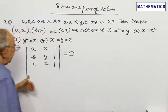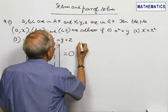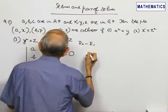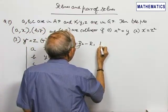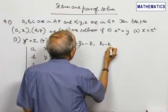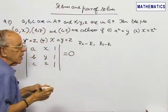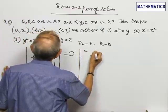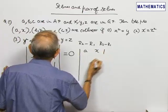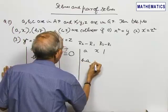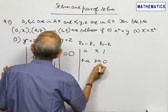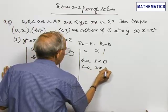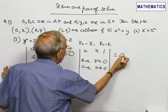Let us simplify the determinant. The operation I am going to perform is subtract the first row from the second row, subtract the first row from the third row. R2 minus R1, R3 minus R1. So this reduces to A, X, 1; B minus A, Y minus X, 0; C minus A, Z minus X, 0. This is equal to 0.